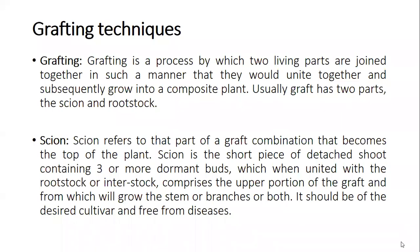The scion refers to the part of the graft combination that becomes the top of the plant. The scion is a short piece of detached shoot containing three or more dormant buds which unite with the rootstock or interstock, comprising the upper portion of the graft from which will grow the stem, branch, or both. It should be the desired cultivar and free from diseases. After a successful graft, new flowering and fruiting are observed in the scion portion.